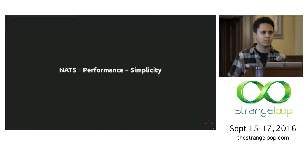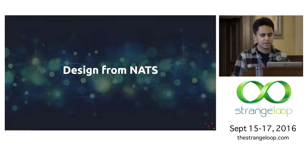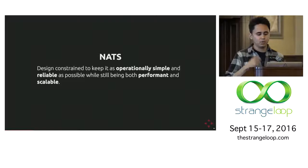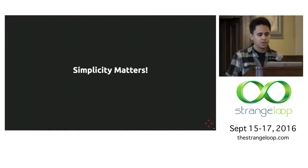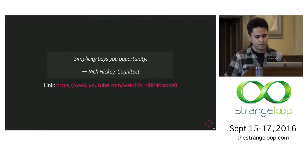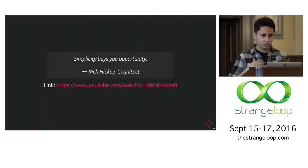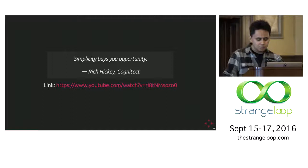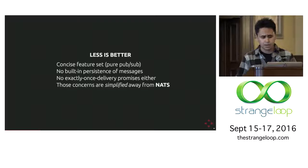Moving on to the design behind NATS. NATS has a design that was kept constrained so that it's operationally simple and reliable as possible, without compromising performance and scalability. This is because simplicity matters. If you're familiar with the work from Rich Hickey, there's a great talk from RailsConf where he explains that simplicity buys you opportunity, and he goes on to define something called architectural agility — having a system that is fundamentally simple. That type of agility dominates over any other type of agility. NATS achieves simplicity by having a consistent, strictly limited feature set.